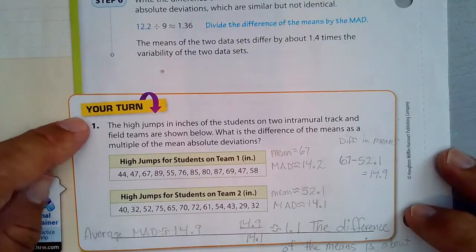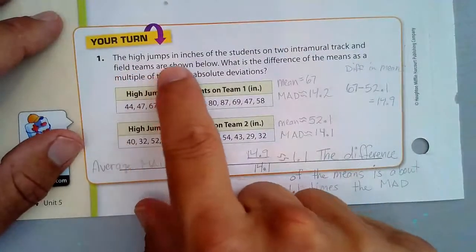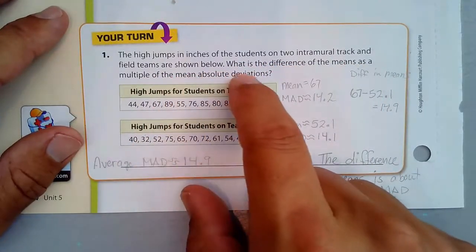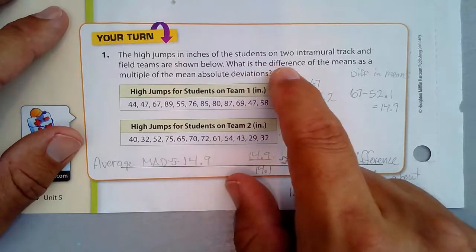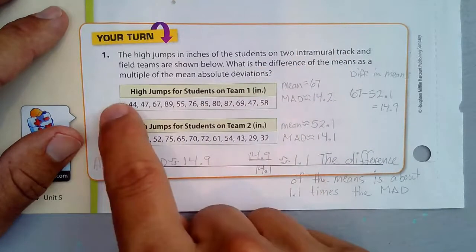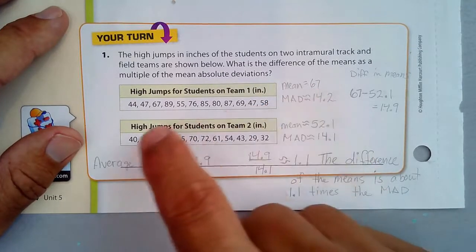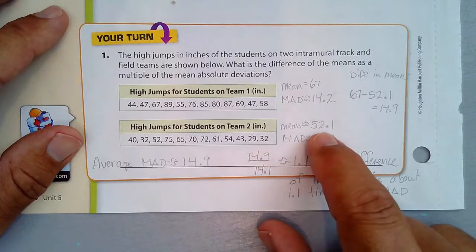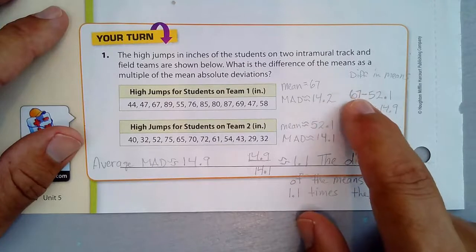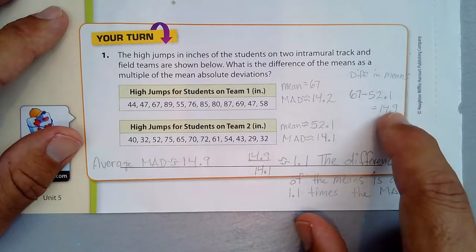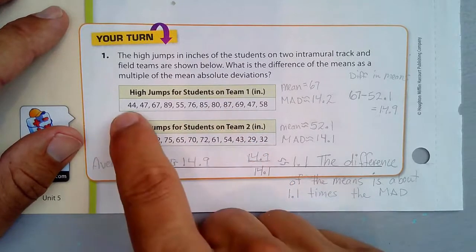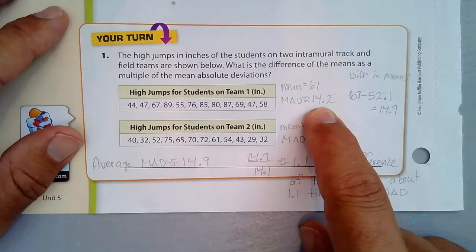Now we have a Your Turn question. The height jumps in inches of the students on two intramural track and field teams are shown below. What is the difference of the means as a multiple of the mean absolute deviations? Let's break this down — get the means first. The mean of the first data set, add them up and divide by how many you have, is 67. The mean of the second data set, add them up and divide by how many you have, is about 52.1. So the difference of the means is 14.9.